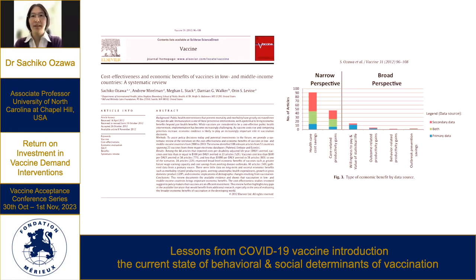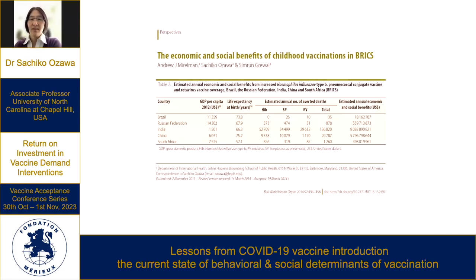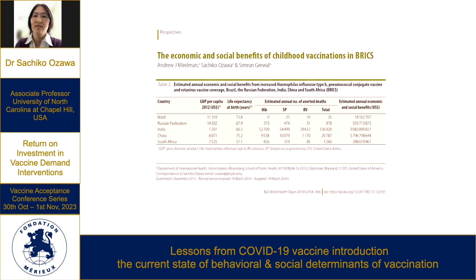Now that we've had the COVID-19 pandemic, I think we have more evidence on the economic benefit around outbreak prevention savings in particular. We were also starting to document it for specific countries. This was some work we did for BRICS countries — Brazil, Russia, India, China, and South Africa — looking at the economic and social benefits of childhood vaccines, so that we can start to look at, based on specific country characteristics, what this actually means in terms of not just the health outcomes, but the economic benefits of vaccination.